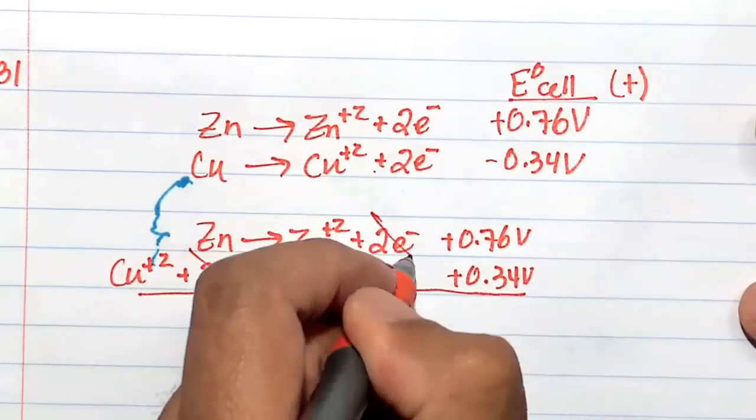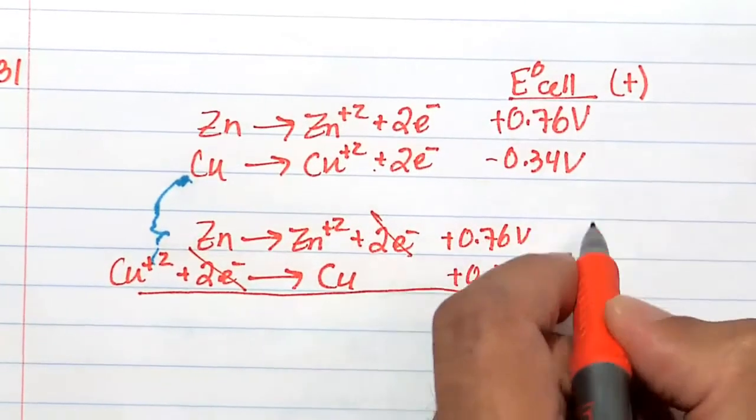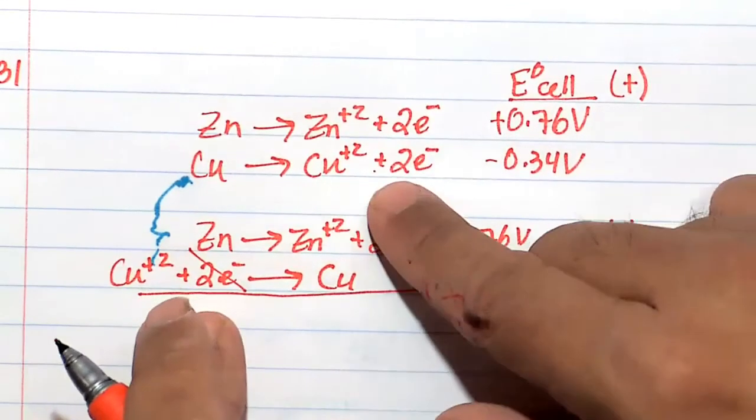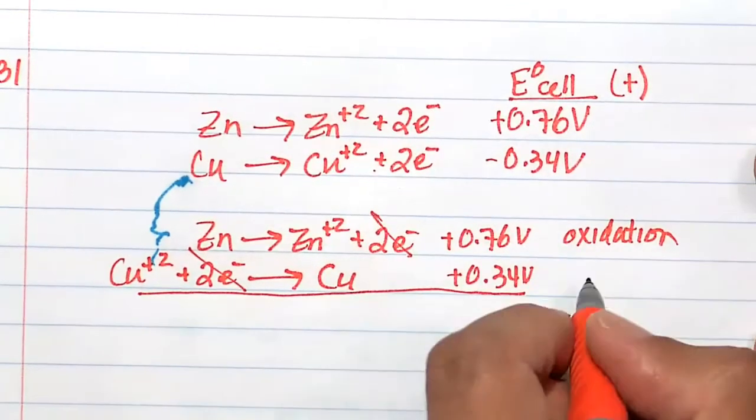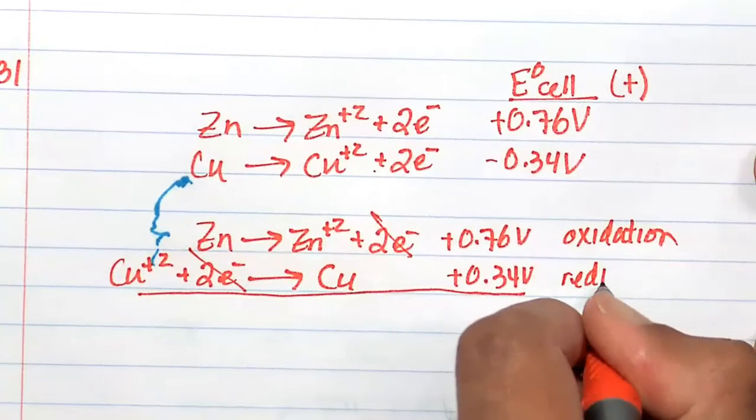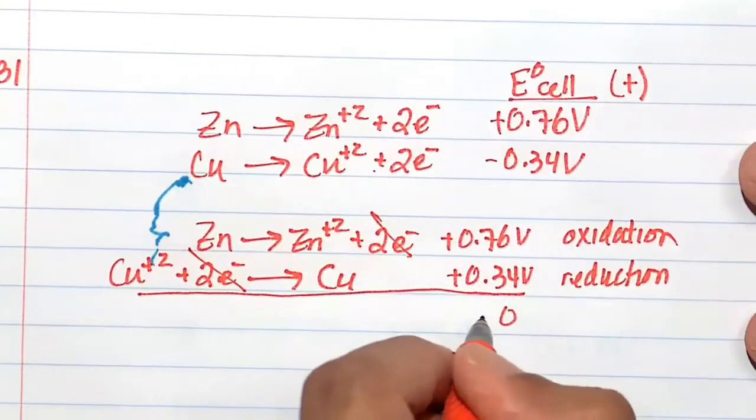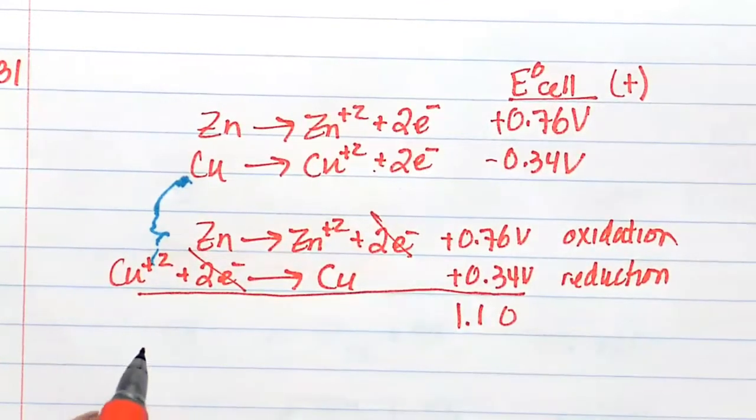The two electrons cancel. Here we lost two electrons—that's oxidation, this is the anode. Here we gained two electrons by flipping—that's the reduction, also known as the cathode. So here we have the anode and the cathode.